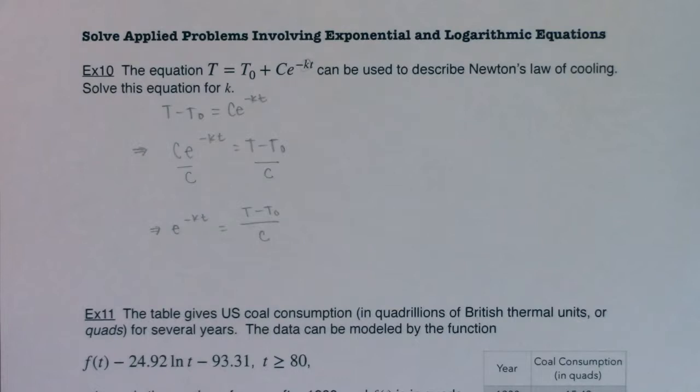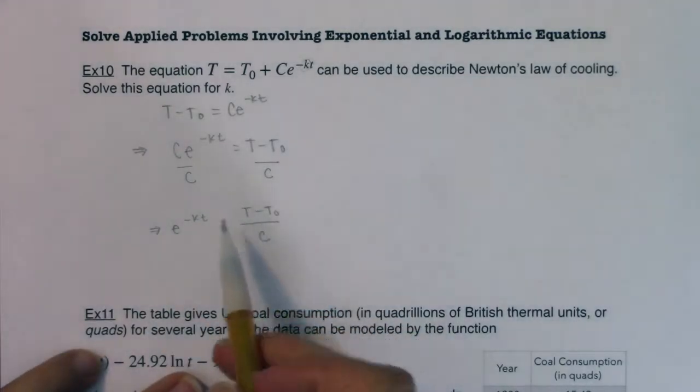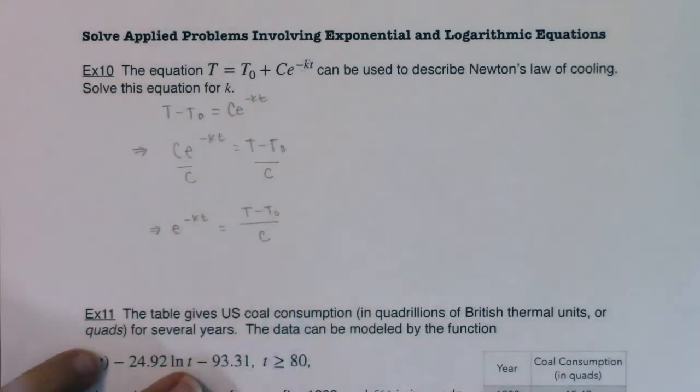I'm just going to keep on going. Now I have an exponential equation. I've got e to the negative kt and I have t minus t sub zero over here.